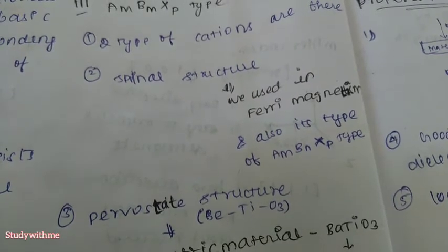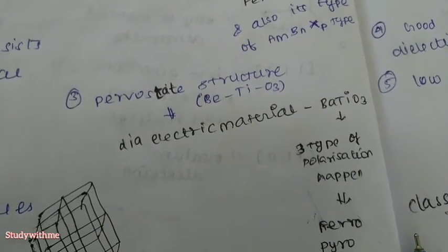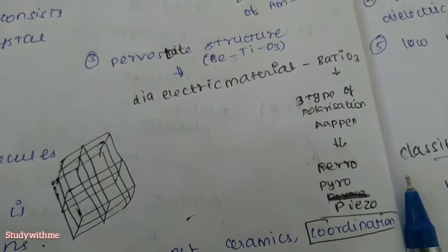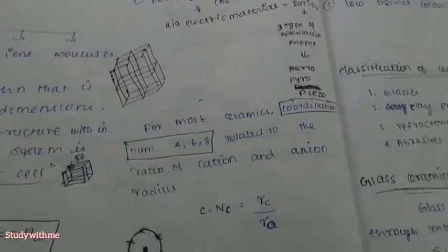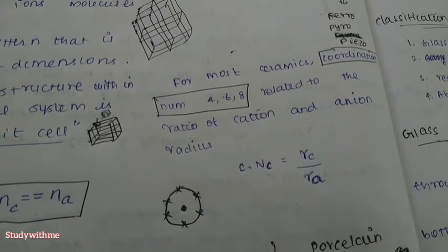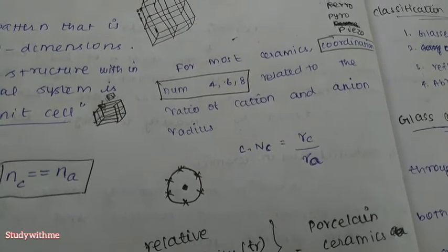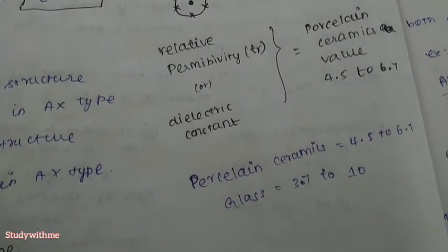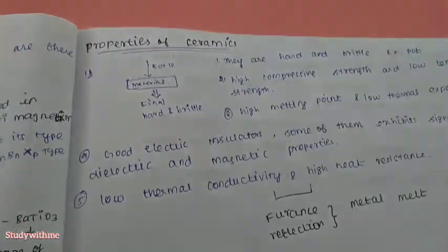The spinel structure is found in ferro-mechanism. BaTiO3 is found in 3 types: ferro, pyro, and piezo. The ratio of the cation divided by the ratio of the anion gives the dielectric constant (relative permittivity). The dielectric constant values range from 4.52, 6.7, and 3.7 to 10 for various ceramics.